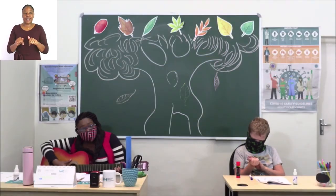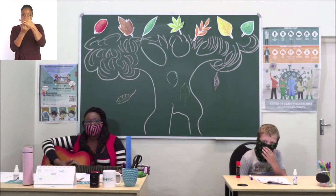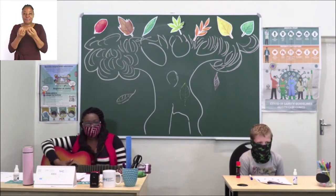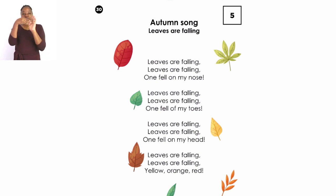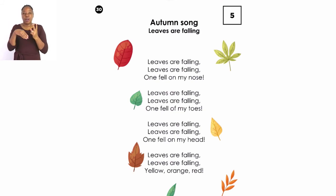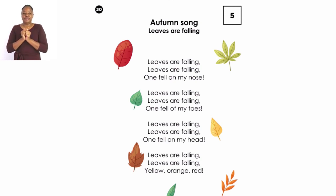Now we have a special treat for you! I'd like us to please sing about autumn. We have talked so much about autumn that we now need to sing about it. Let us turn to page 30. On page 30 you can see there is a lovely song talking about the leaves falling and where they are falling. The first one fell on my nose, the second one fell on my toes, the last one fell on my head, and then it tells us the different colors of the leaves: yellow, orange, and red.